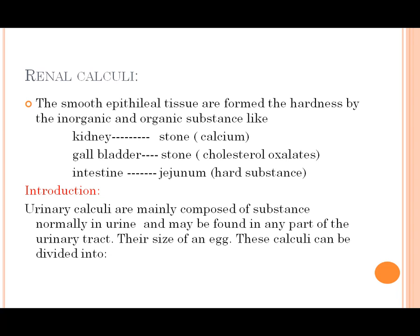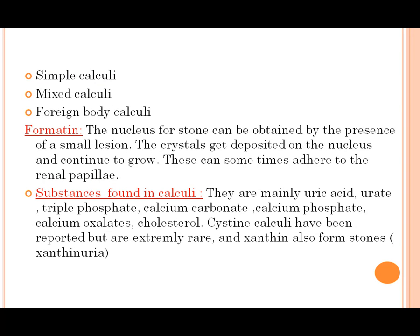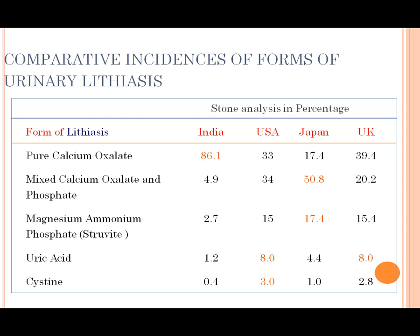Urinary calculi are composed of substances normally found in urine. They may be found in any part of the urinary tract like urethra, ureter, or urinary bladder. Calculi can be divided into simple calculi, mixed calculi, and foreign body calculi. These are the comparative incidence of the forms of urinary lithiasis.